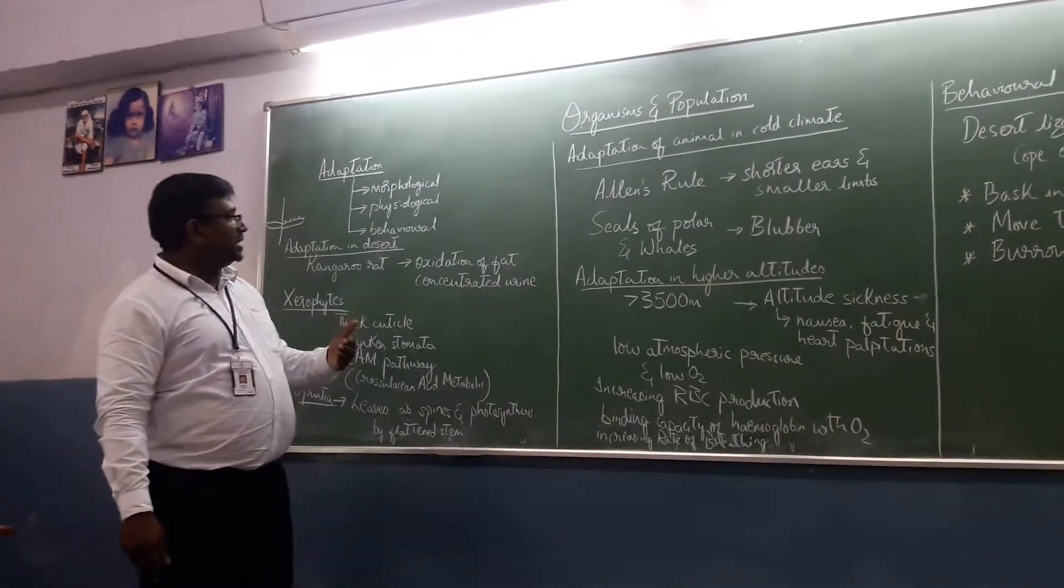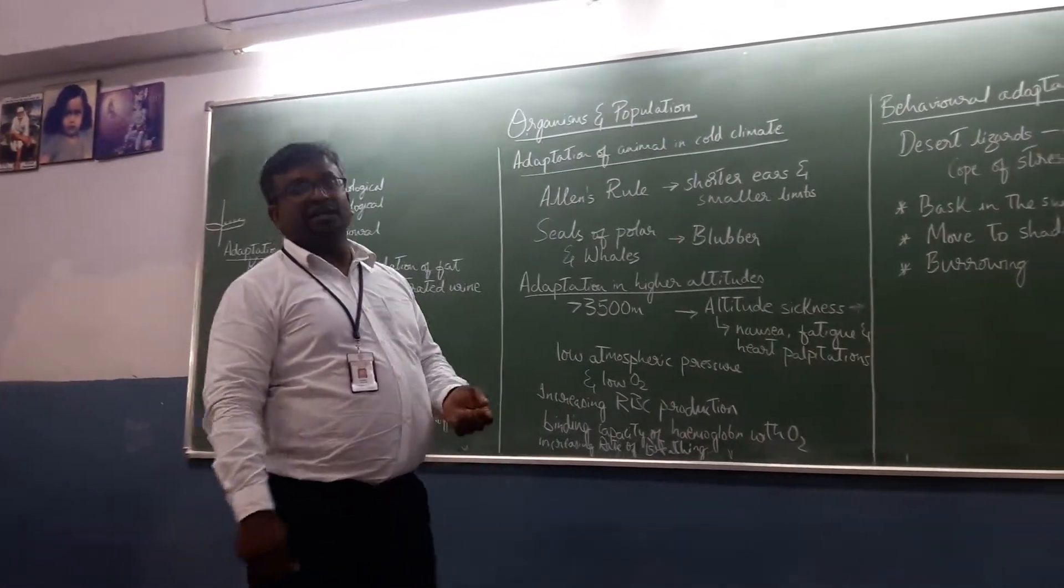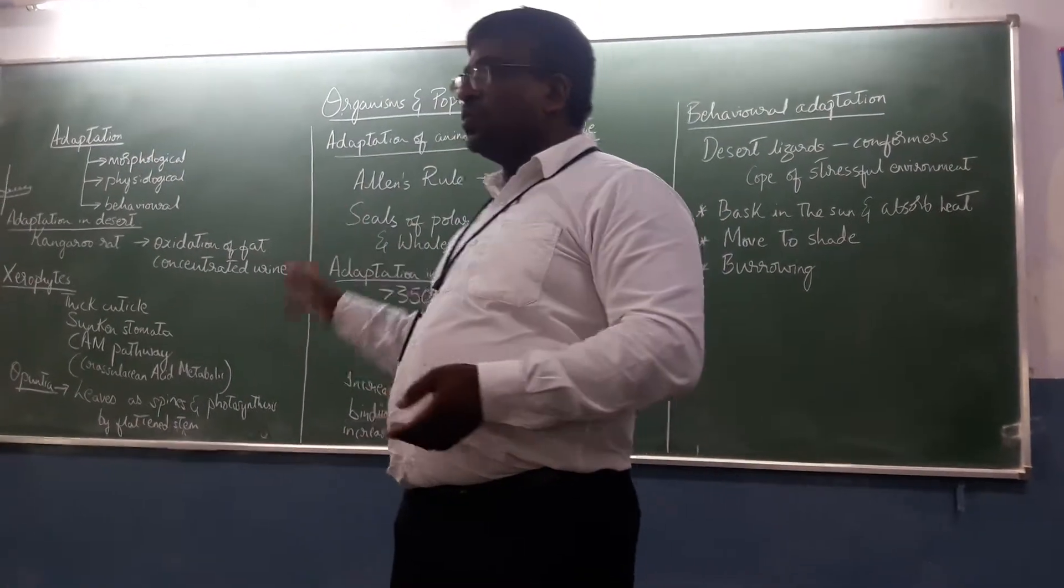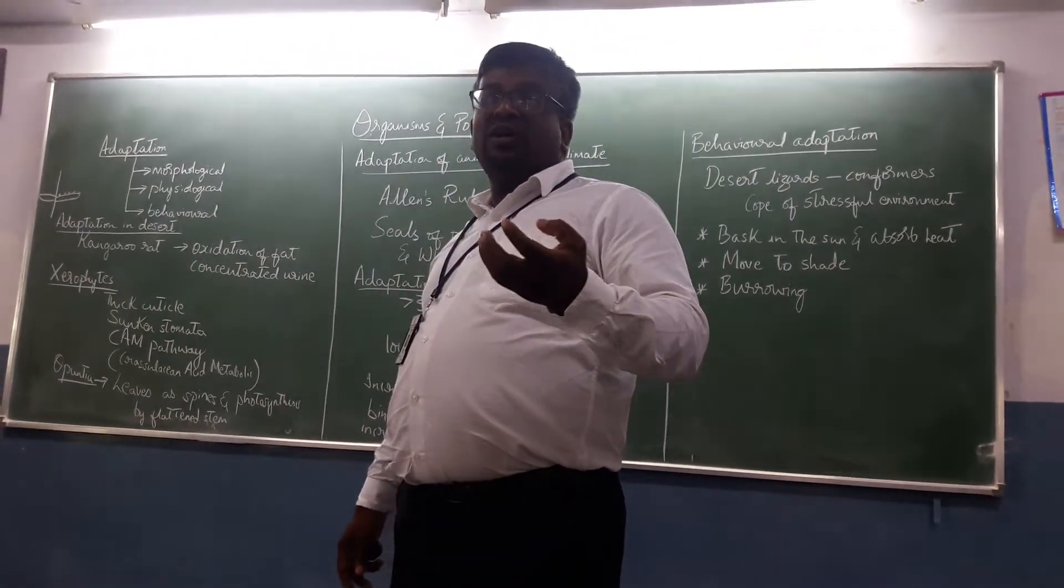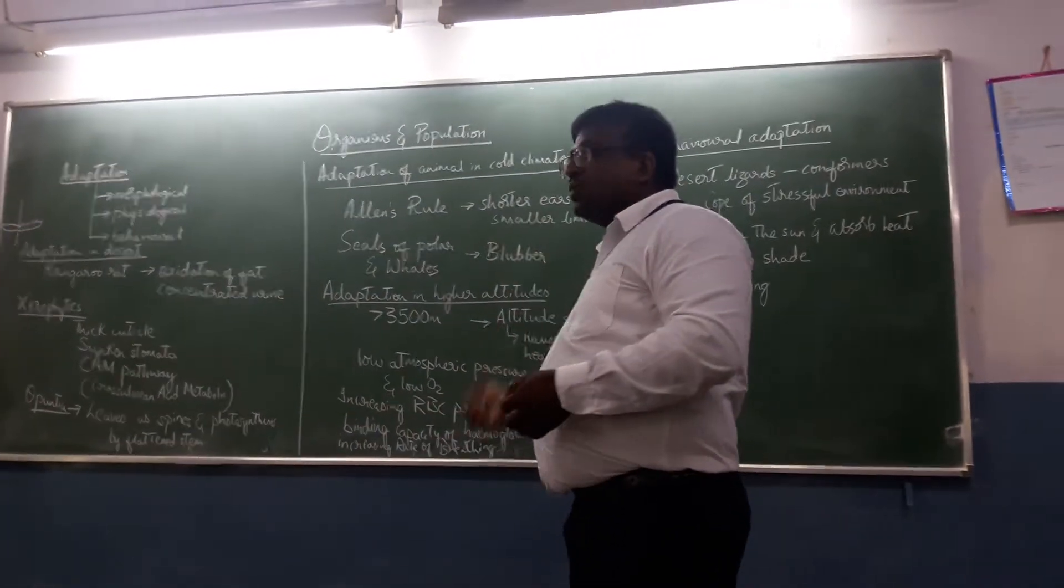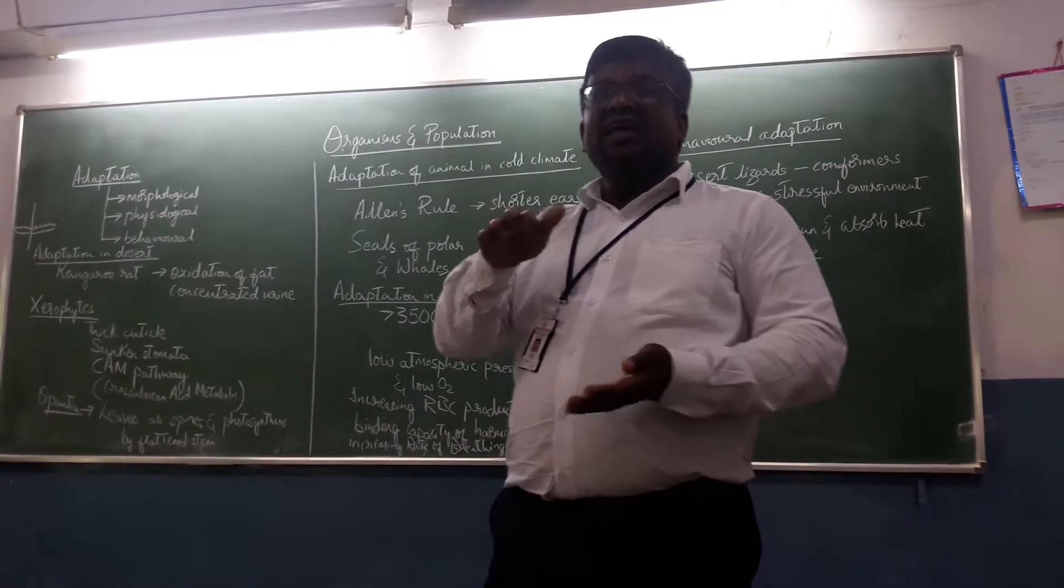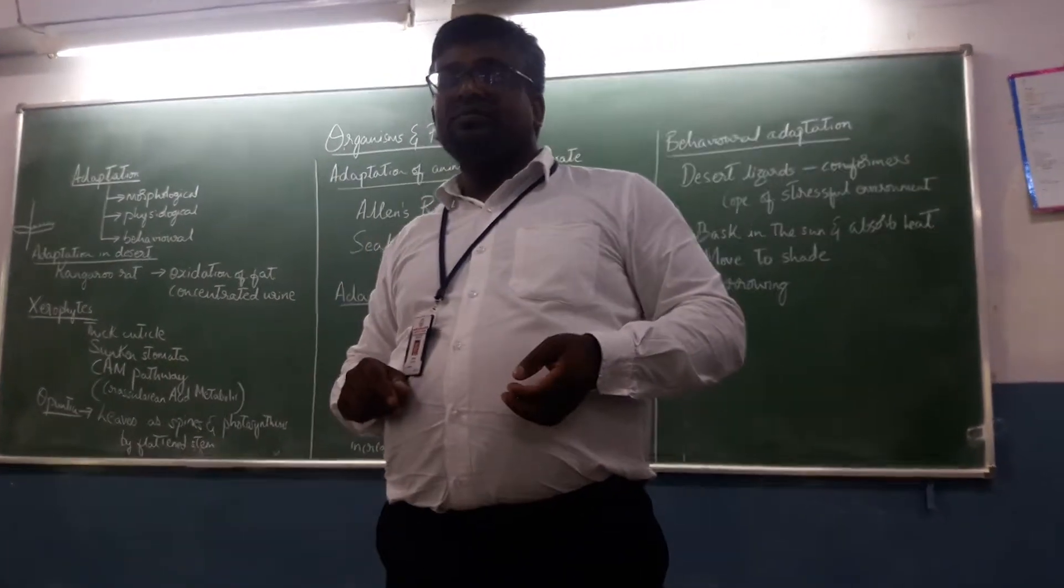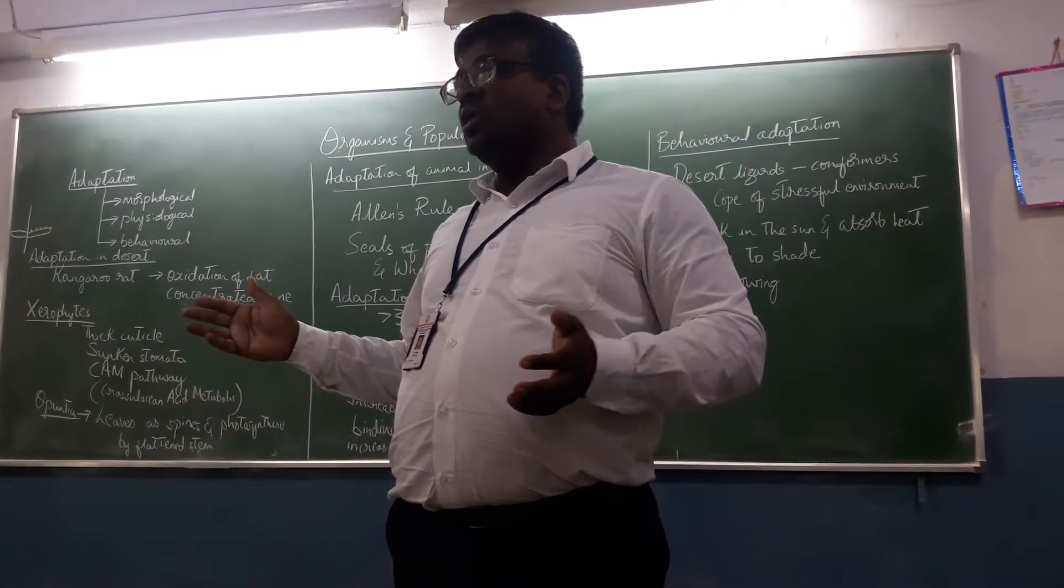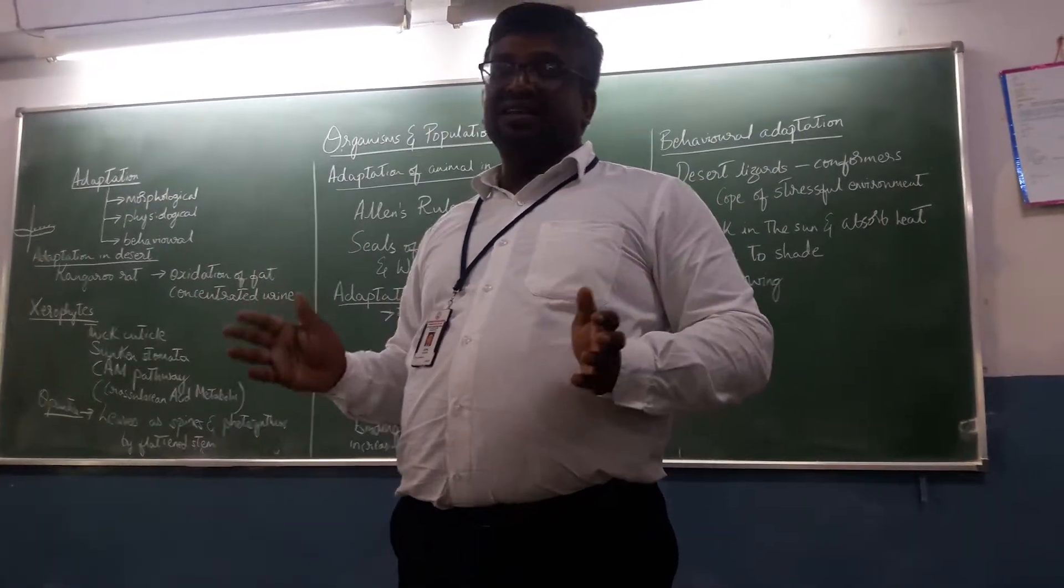Now adaptations of animals in cold climatic conditions. What might be the adaptations of animals? According to Allen's rule, the animals which are found in the cold regions, they are going to have shorter ears and smaller limbs. So that their body surface available for loss of heat is lesser.